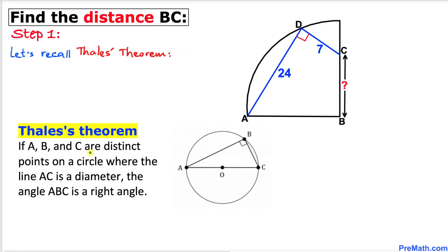Our very first step: let's recall Thales' theorem. Thales' theorem states that if points A, B, and C are distinct points on a circle where line AC is a diameter, then angle ABC is a right angle — that means 90 degrees. Now let's apply this theorem to our given figure.